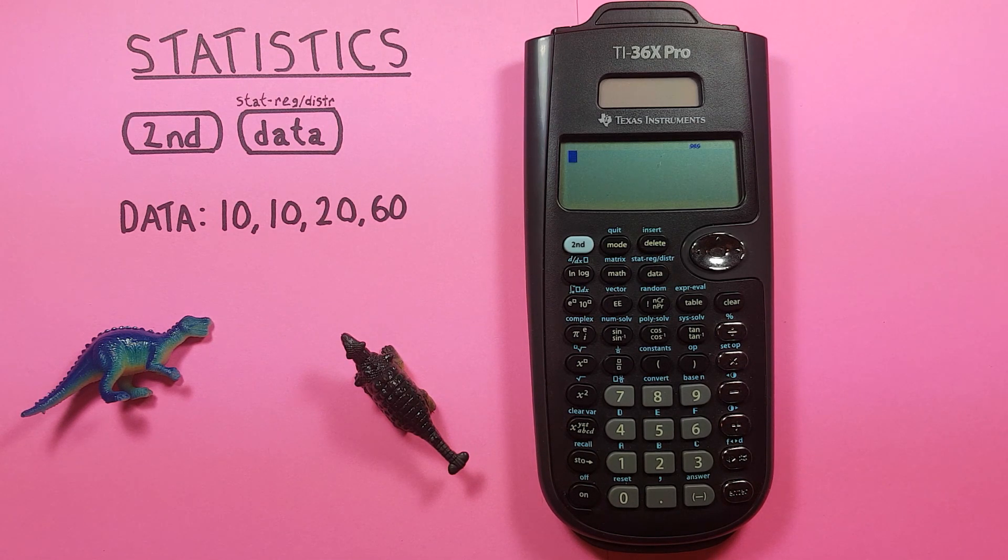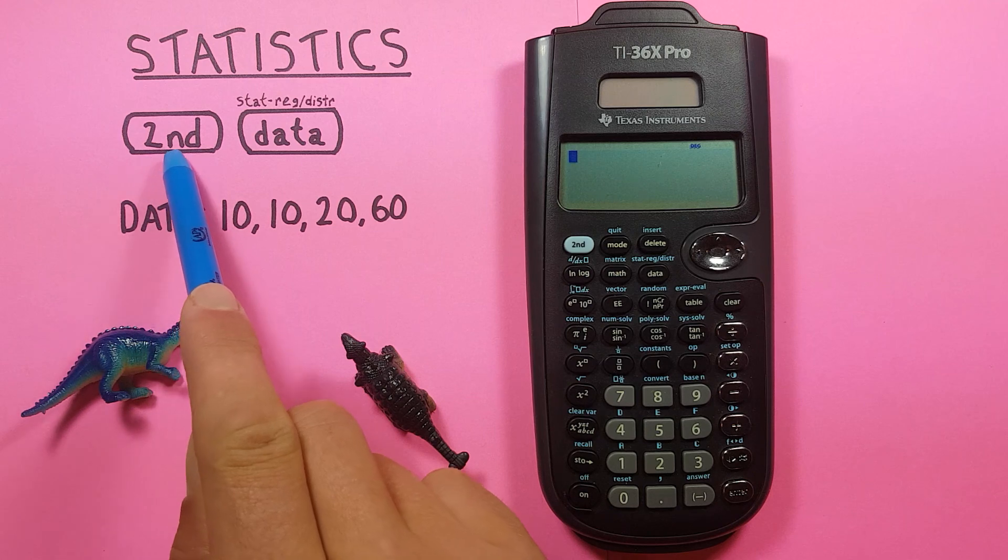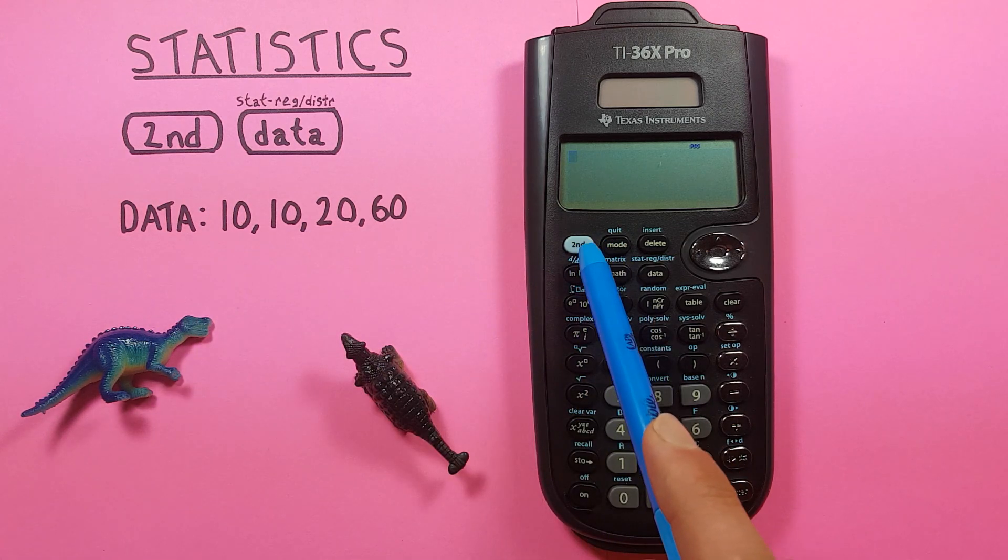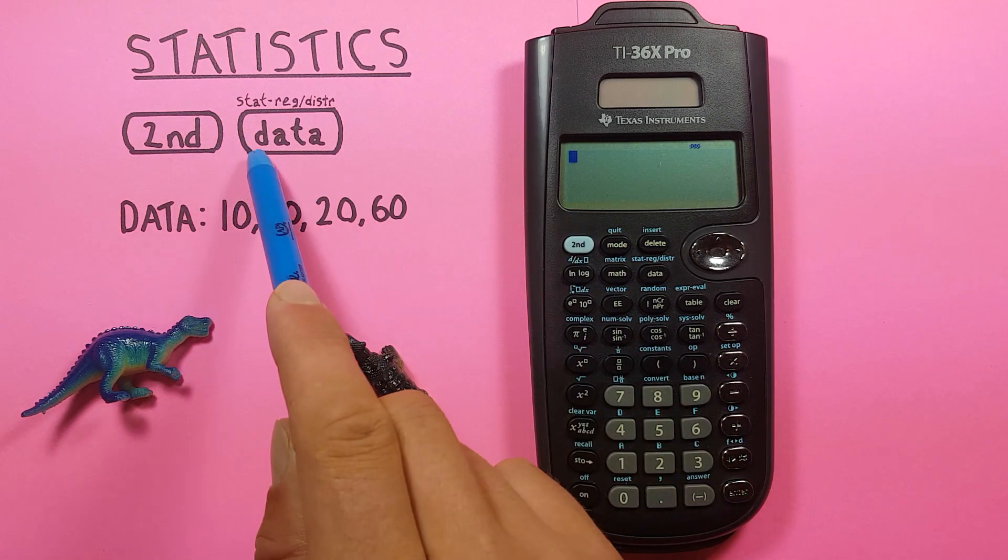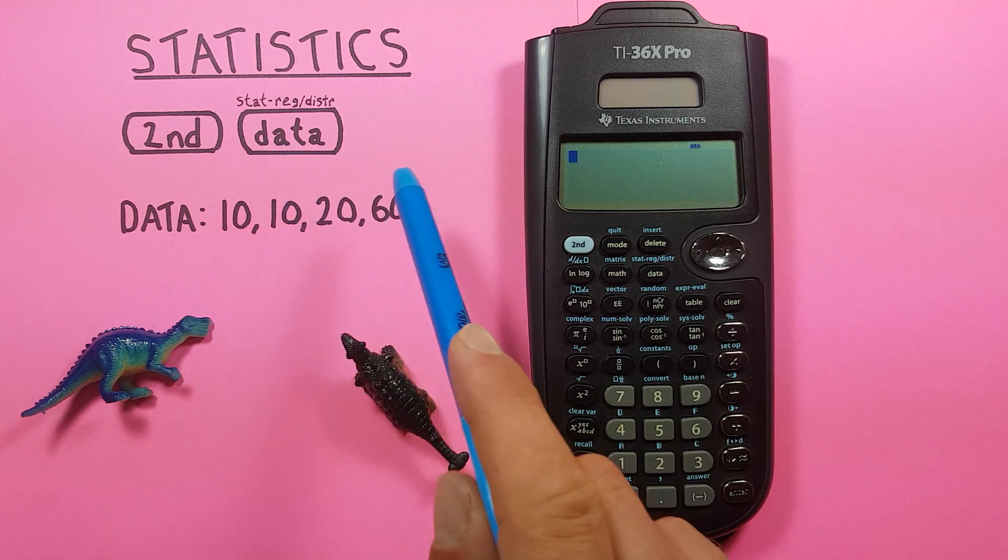To do this we'll be using the second function key, looks like this, located up here in the top left corner, as well as the data key, that looks like this, located here.